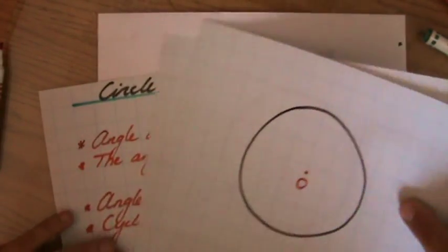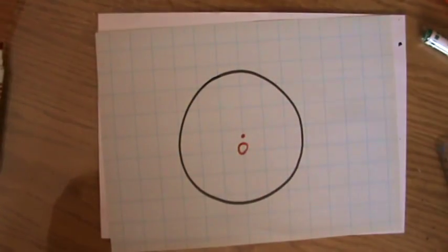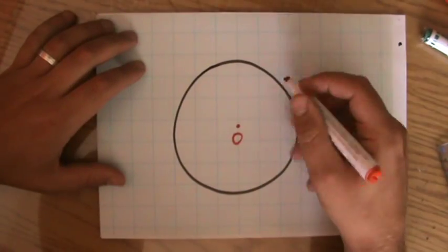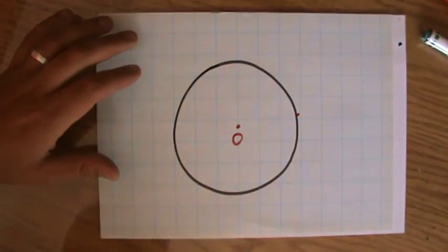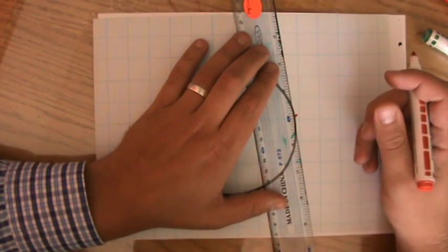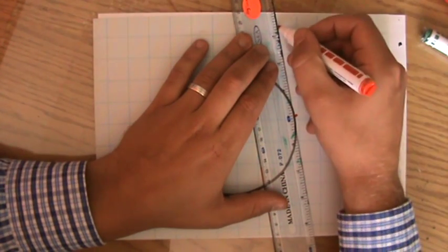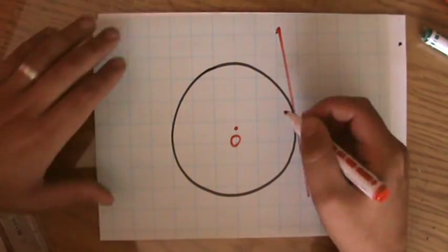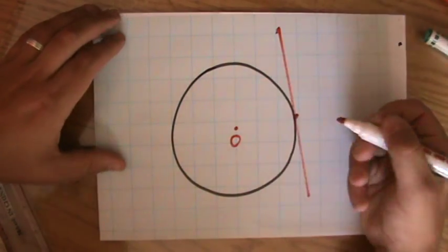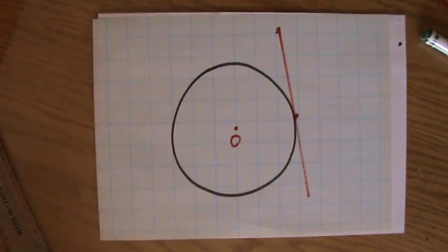And as you know, a tangent is a touch line. So it just touches the circle at, let's say, this point at the circumference. So with a marker it's a little bit difficult to construct it, but do you see that's a tangent? It's just touching the circle at the circumference at that point.